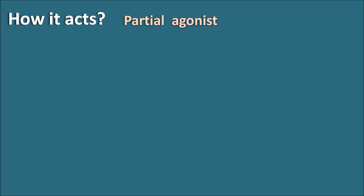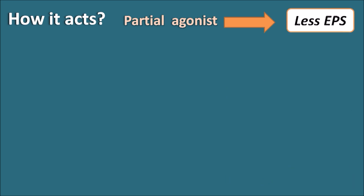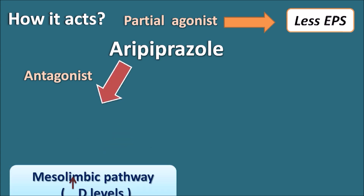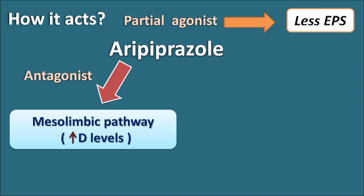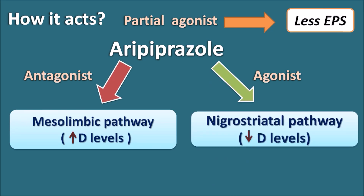Aripiprazole is unique in its action in that it acts as a partial agonist on the dopamine receptors, thereby having less extrapyramidal side effects. Aripiprazole can act as an antagonist on the mesolimbic pathway where dopamine levels are excessively increased, and at the same time it can act as an agonist on the nigrostriatal pathway where dopamine levels are decreased. Increased dopamine levels in the mesolimbic pathway are responsible for psychosis, and decreased dopamine levels in the nigrostriatal pathway are responsible for motor disturbances like extrapyramidal side effects.